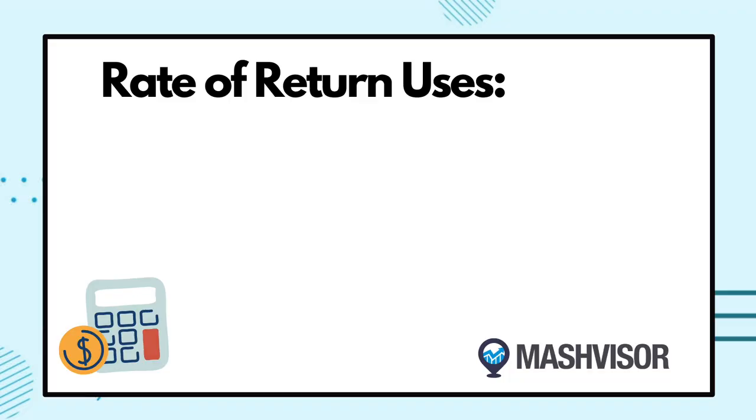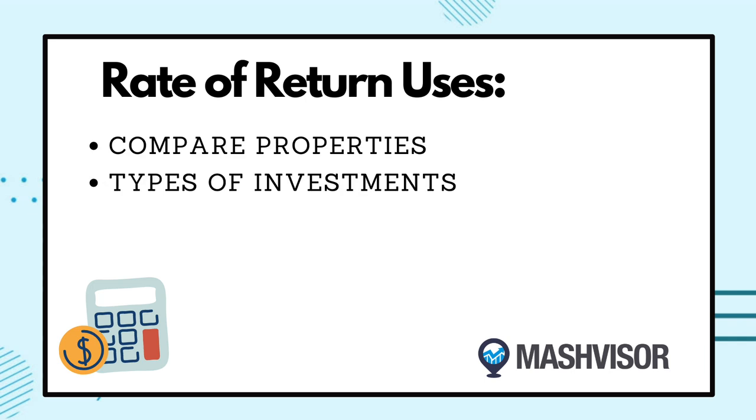On the other hand, if you were to invest $100 and make back 2% per year, your money may have been better invested elsewhere. An investor would use a rate of return when considering purchasing a property and wanting to know whether it's a good investment or worth the risk. One can use the rate of return to compare different properties or different types of investments altogether. For instance, if one knows they can get a 4% return on a bond, they wouldn't invest in a real estate property returning only 2%.